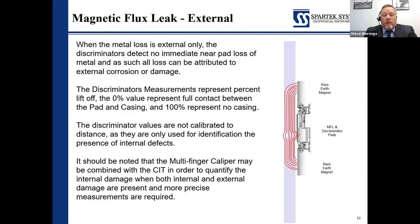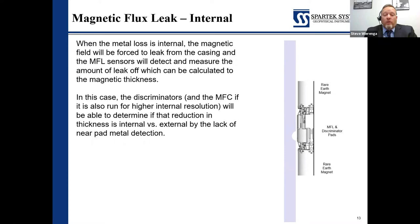Between internal and external corrosion: on this particular one, this is all external. There are two other sensors in each pad — standoff discriminators — that detect if there is near-pad proximity of metal. If there is near-pad proximity, the assumption is that corrosion or metal loss is to the outside of the pipe. For even more precision, the tool can be run in combination with a multi-finger caliper, giving a very good internal map as well. If corrosion is internal, the discriminators will not see metal near-pad, and the assumption is made that the magnetism is leaking from an internal defect.